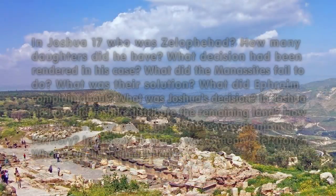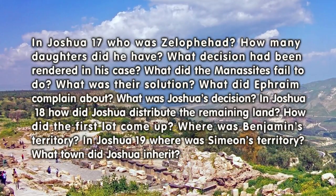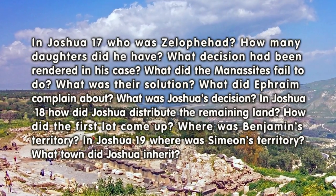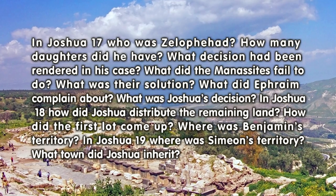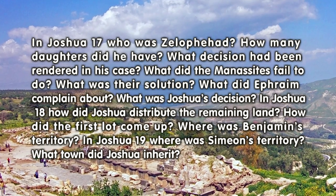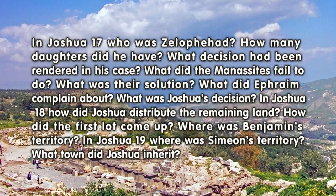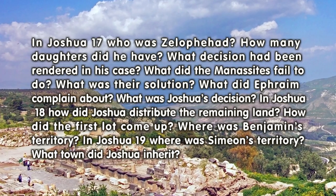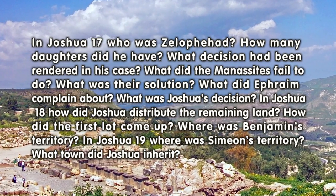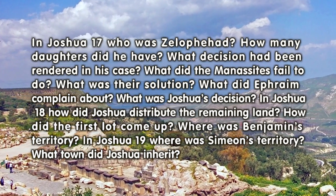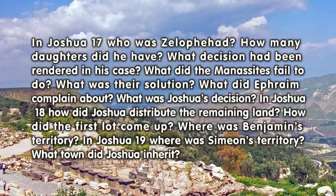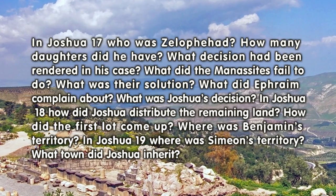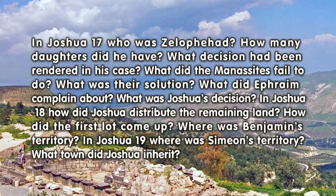In Joshua 17: Who was Zelophehad? How many daughters did he have? What decision had been rendered in his case? What did the Manassites fail to do? What was their solution? What did Ephraim complain about? What was Joshua's decision?